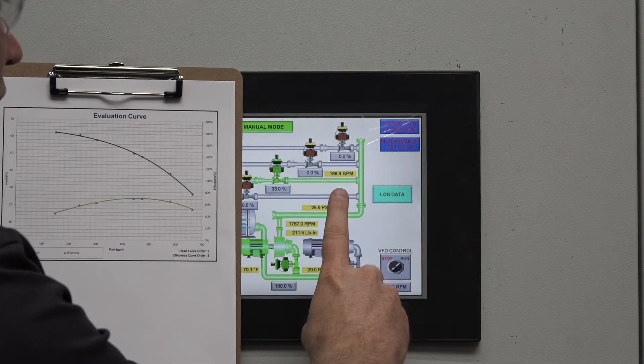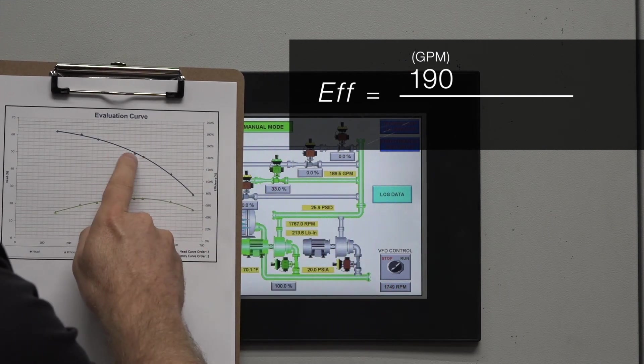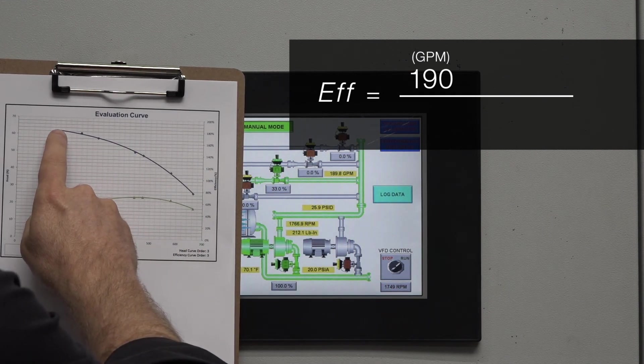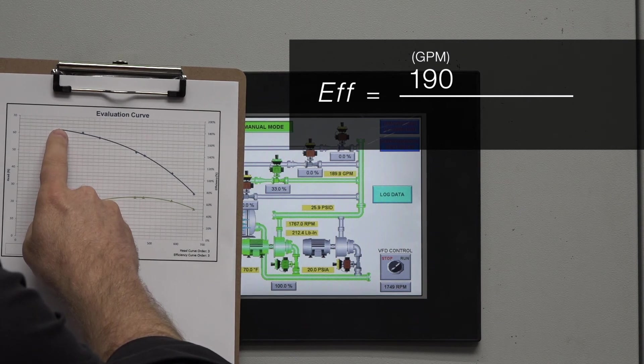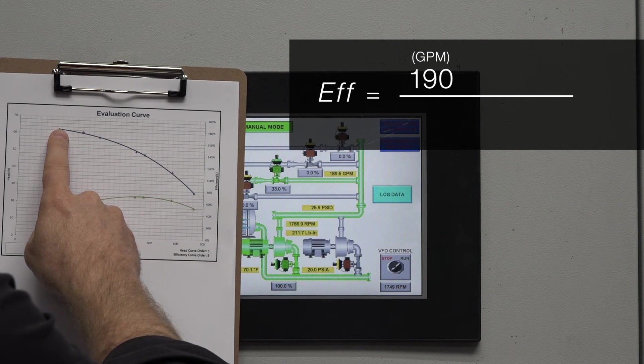Now the pump is operating at around 190 gallons per minute. As you can see that point is well to the left of the performance curve and we would expect the head pressure to go up and the power to go down.